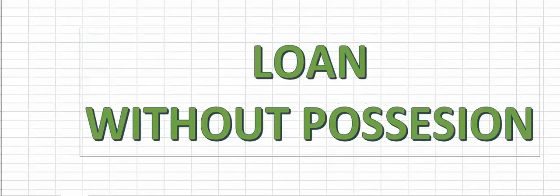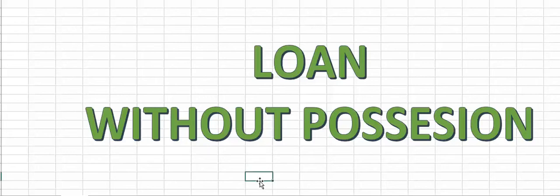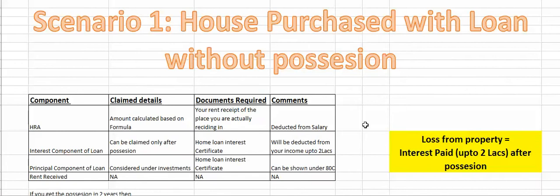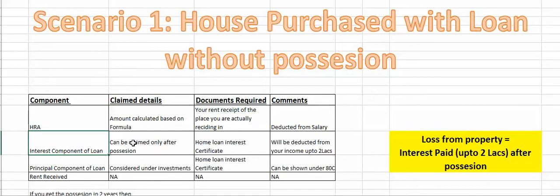So the first case we will see is loan without possession. This means that you have a house and you have a loan, but you have no possession. In this case, the HRA that your office provides, you can claim it. You will show a rent receipt and your salary automatically reflects it. This means that the interest component of the loan, you cannot claim it.